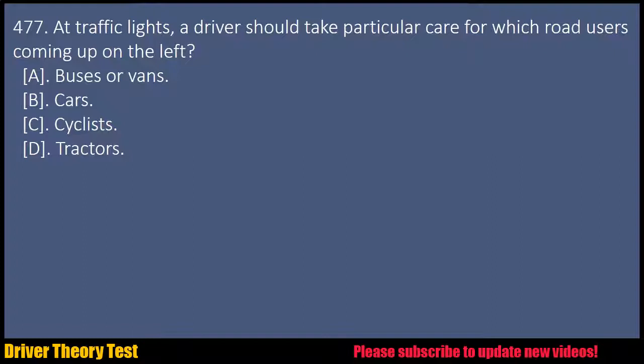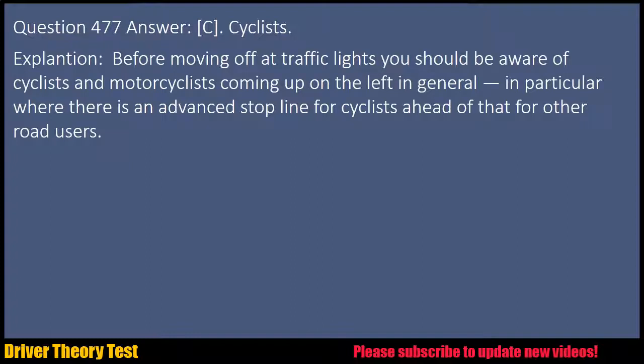Question 477: At traffic lights, a driver should take particular care for which road users coming up on the left? A. Buses or vans. B. Cars. C. Cyclists. D. Tractors. Answer: C. Cyclists. Explanation: Before moving off at traffic lights, you should be aware of cyclists and motorcyclists coming up on the left, in particular where there is an advanced stop line for cyclists ahead of that for other road users.